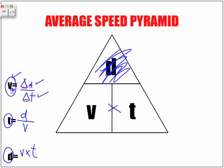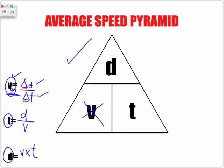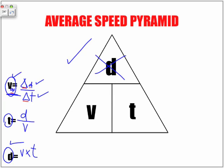So instead of memorizing two or three equations, remember this pyramid and remember how to use it. Whatever you're trying to find — if you're trying to find V, cover up V; if you're trying to find T, cover up T, and it's distance divided by speed; if you're trying to find distance, cover up distance, and notice how V and T are side by side, so the operation is multiplication.